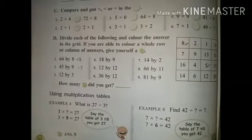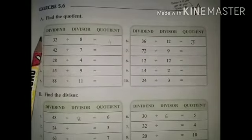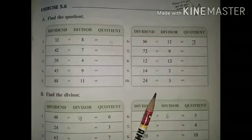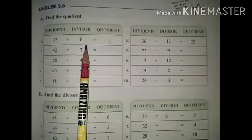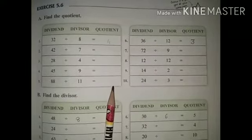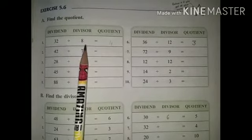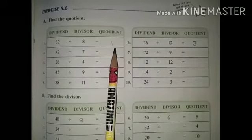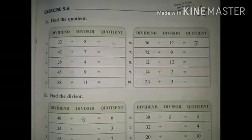Next, Exercise 5.6 Point A: find the quotient. These tables are made. We will solve the first question — what is the dividend, what is the divisor, which is the quotient? 32 divide 8 equals — find the quotient. Same as it is, find all the quotients.